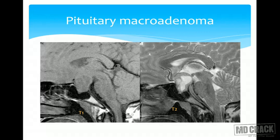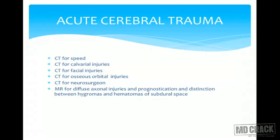For pituitary adenomas, MRI is the modality of choice. A pituitary microadenoma is less than 10 mm and a macroadenoma is more than 10 mm. If a microadenoma is suspected, a dynamic MRI of the pituitary gland with contrast must be performed.